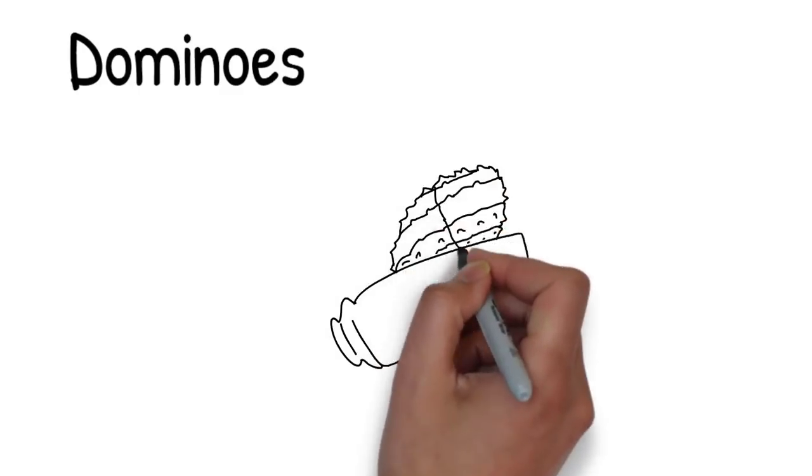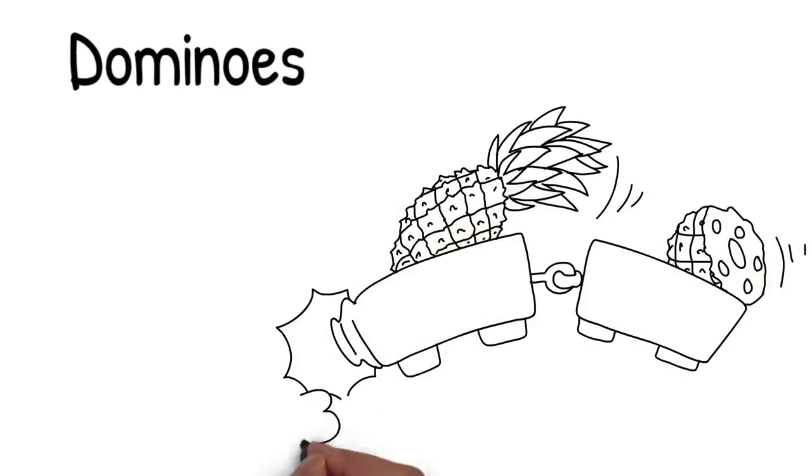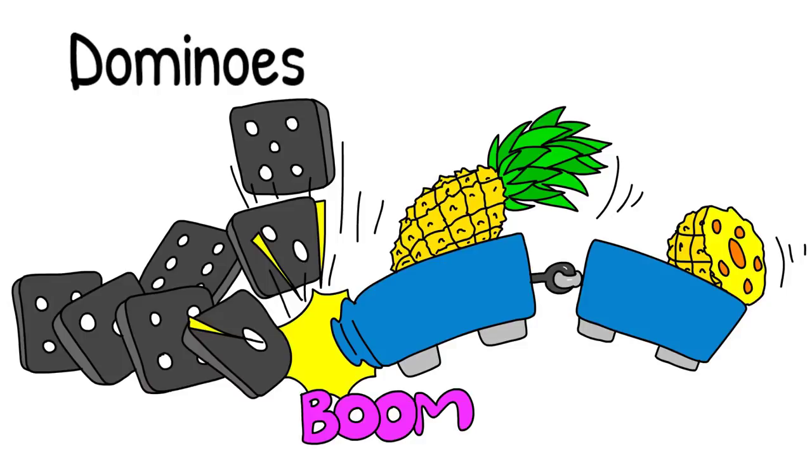Unfortunately the roller coaster goes a little crazy and crashes into a long line of dominoes. The dominoes are black tiles with white dots on them and they go flying everywhere.